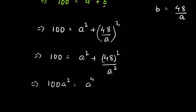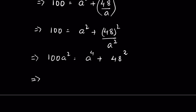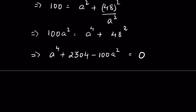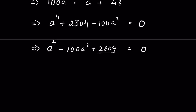So we have a⁴ + 2304 − 100a² = 0. Rearranging to form a quadratic equation in a²: a⁴ − 100a² + 2304 = 0. Let's factorize this.